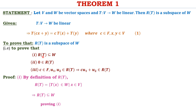We first show that R(T) is a subset of W. By definition of R(T), it contains the set of all images of the form T of X for X belonging to V. Since R(T) contains elements of W, clearly R(T) is a subset of W, thus proving the first condition.